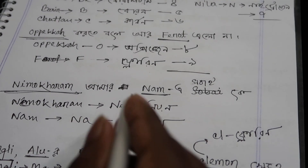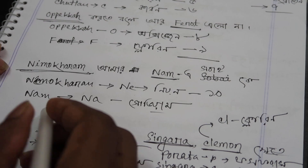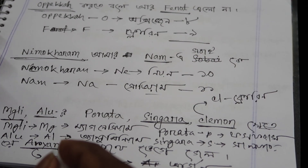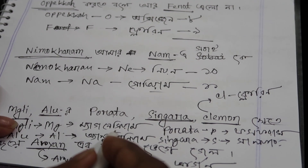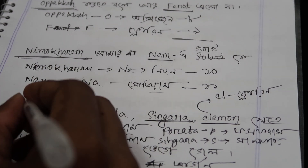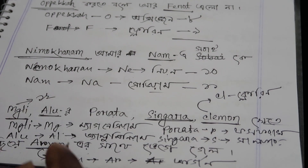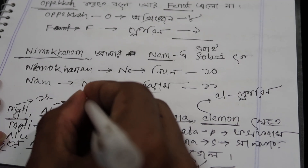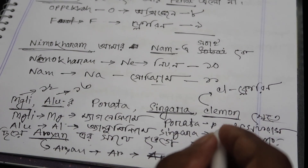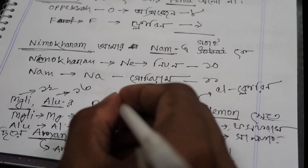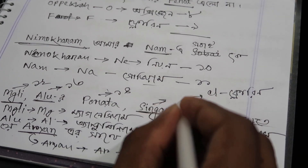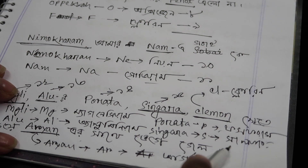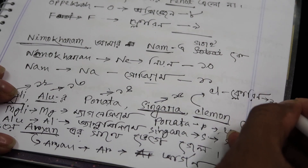Let's look at this first question. This is 10 — this is Sodium. This is 1. This is Magnesium — this is 12. This is Aluminum — this is 3. This is Parata — this is Phosphorus — this is 4. This is S — this is Sulfur.